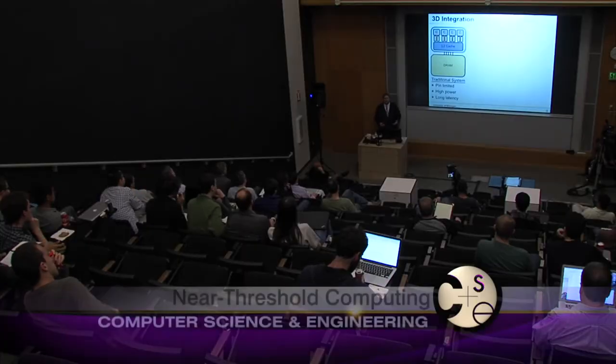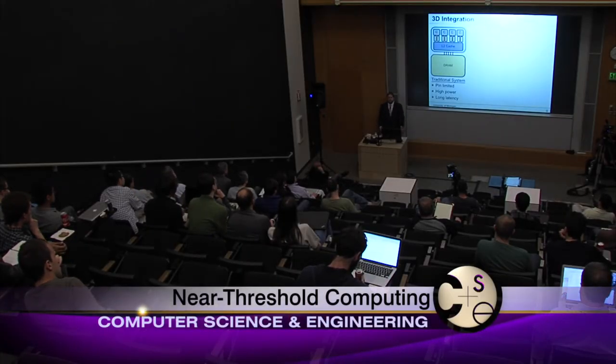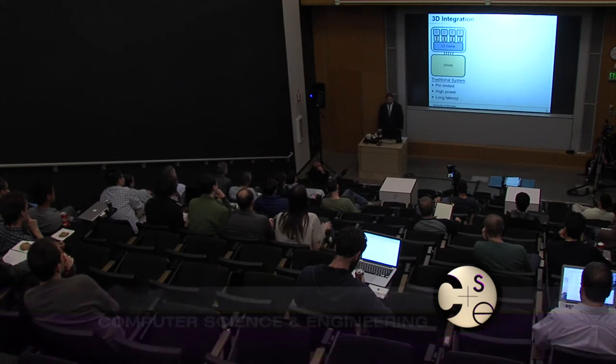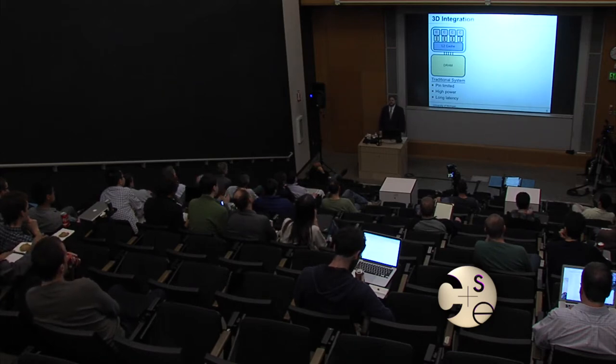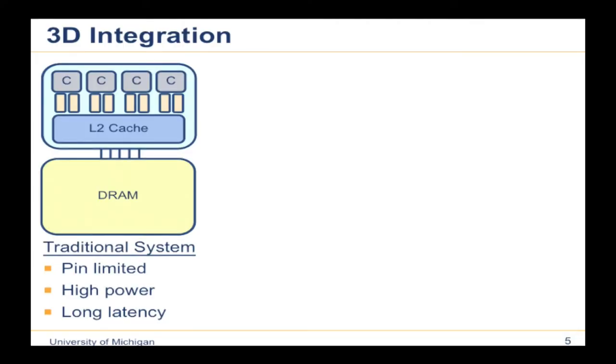Let's look at 3D integration from a high level. In a traditional system, you have one chip with your cores and caches, and a second chip for main memory — think DRAM. The connection between these two chips is pin-limited, clocked at high frequency to get bandwidth, which leads to high power in the interconnect and longer latency as traces go across motherboards and up through DIMMs. The idea of 3D integration is to bring these two chips together, stacking them on top of each other with a way to communicate between layers.